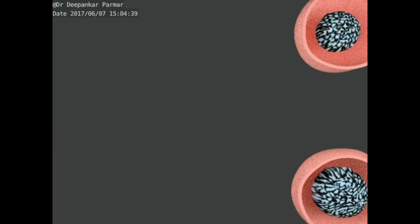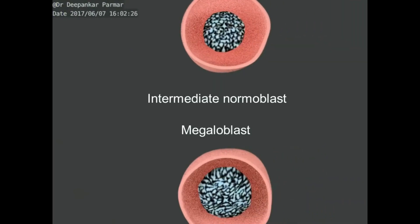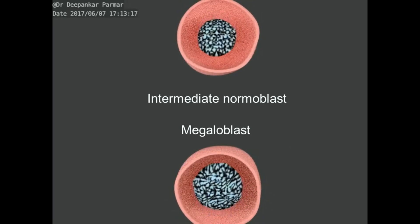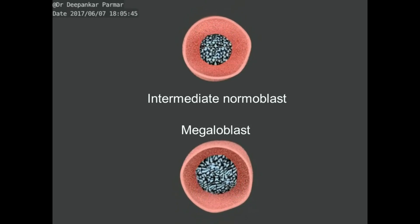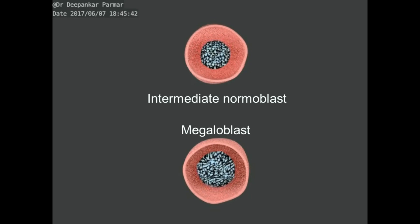Moving now to more mature cells of the erythroid lineage, you see an intermediate normoblast stage evident by relatively eosinophilic cytoplasms in both the cells. But, its corresponding megaloblastic cell has larger nucleus size and open chromatin.